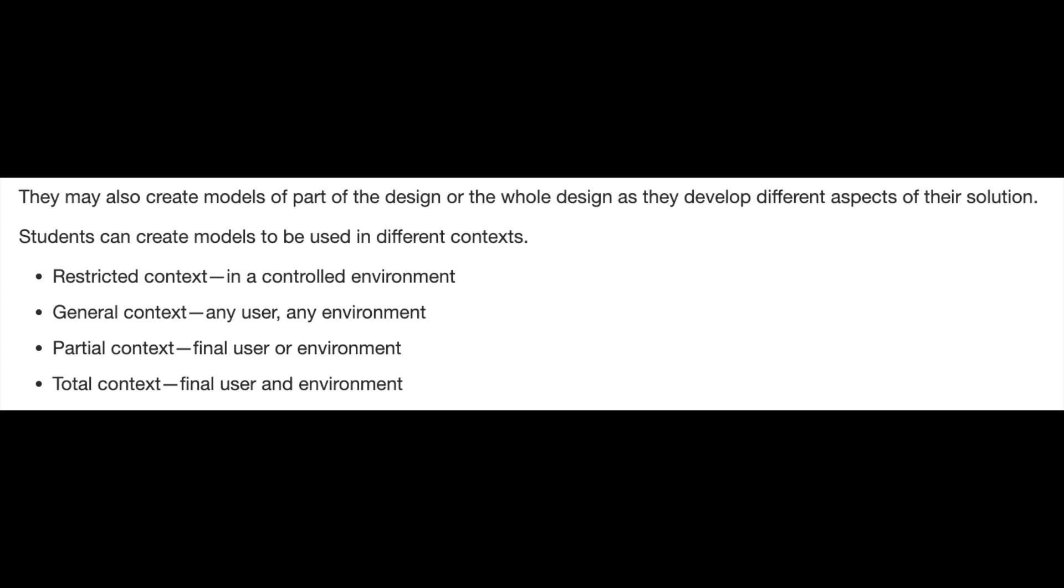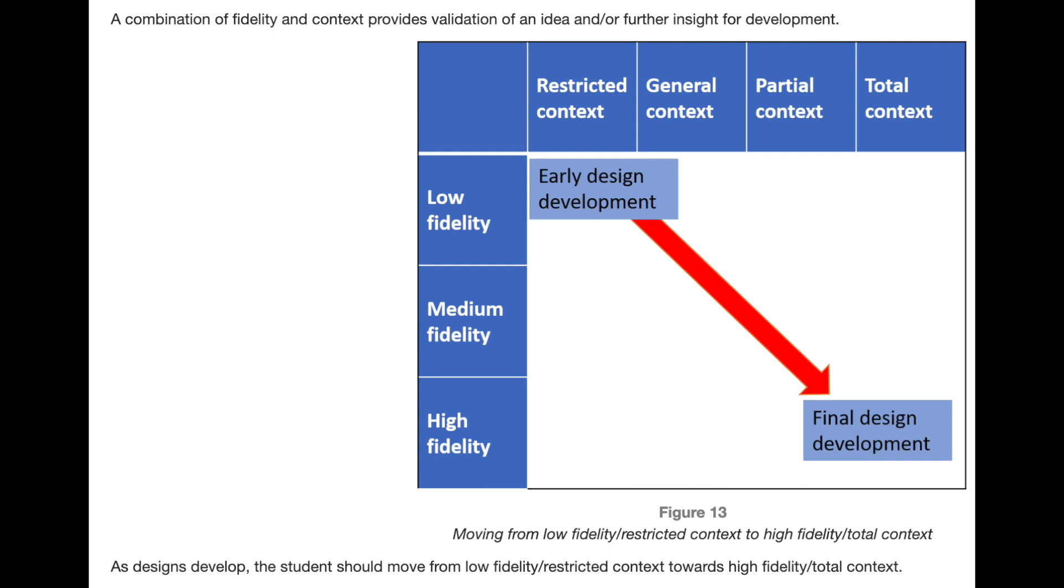You might have a more partial context as you have a further iteration—this is the final user or the environment. And then the total context, which is the final user in the final environment. This chart shows this process. You can see on the y-axis we've got the fidelity from low to high, and we've got the context on the x-axis from restricted all the way to total context.